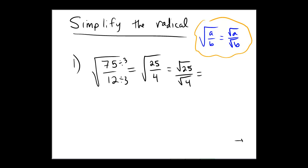And conveniently, both of those are ones that you might know from just standard times tables. The square root of 25 is 5, and the square root of 4 is 2. So the final answer here would be 5 halves.